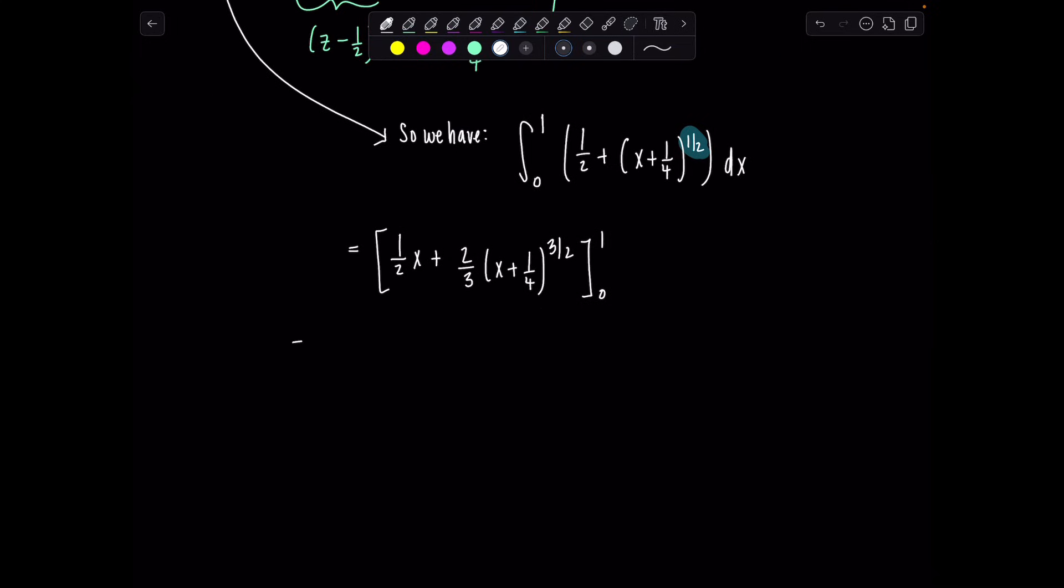And then now we'll just evaluate this at our upper and lower limits of integration. So we'll have 1 half times 1 plus 2 thirds times 1 plus 1 fourth, that's 5 fourths to the 3 halves, minus 0 plus, be careful, this is going to be 2 thirds times 0 plus 1 fourth, which is 1 fourth to the 3 halves. And then let's see, so this is 1 half plus 2 thirds, 5 to the 3 halves is 5 rad 5, 4 to the 3 halves is 8, minus, this is 2 thirds times a 1 eighth.